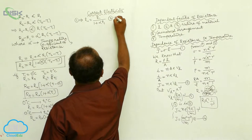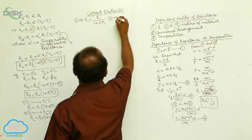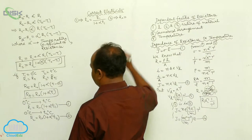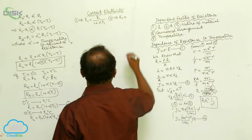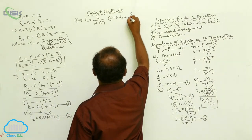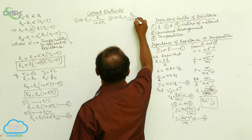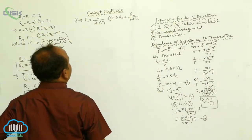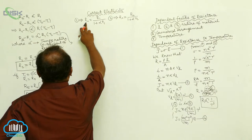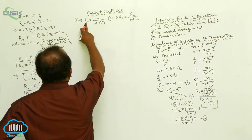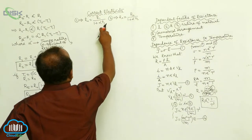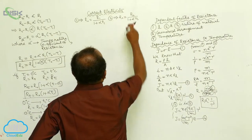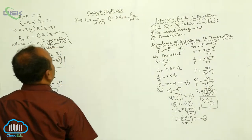From the second equation, once again R0 is equals to R2 by one place alpha into T2. Therefore, from the first equation R0 equals R1 by one plus alpha T1, and from the second equation R0 equals R2 by one plus alpha T2.